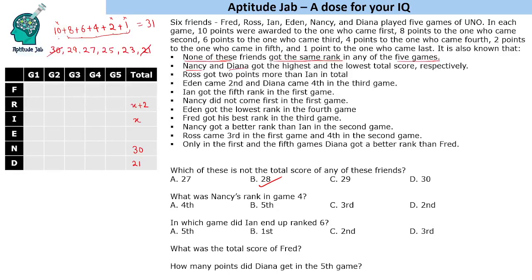Now we are given certain data about who came in which position in which round. Eden came second and Dinah came fourth in the third game, so Eden gets 8 points and Dinah gets 4 points in game three. Ian got fifth rank in the first game, so Ian gets 2 points in game one. Nancy did not come first in the first game, so she cannot get 10 points there.